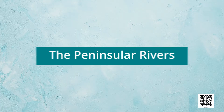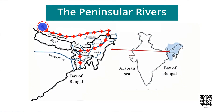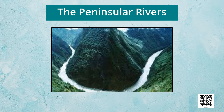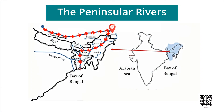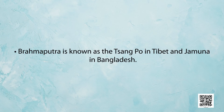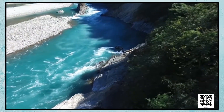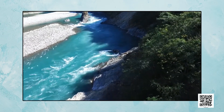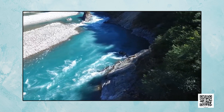The Brahmaputra rises in Tibet, east of Mansarovar Lake, very close to the source of the Indus and the Satluj. It is slightly longer than the Indus and most of its course lies outside India. It flows eastwards parallel to the Himalayas. On reaching Namcha Barwa, it takes a U-turn and enters India in Arunachal Pradesh through a gorge, where it is called the Dihang. It is joined by the Dibang, the Lohit, and many other tributaries to form the Brahmaputra in Assam. The Brahmaputra is known as the Tsangpo in Tibet and Jamuna in Bangladesh.